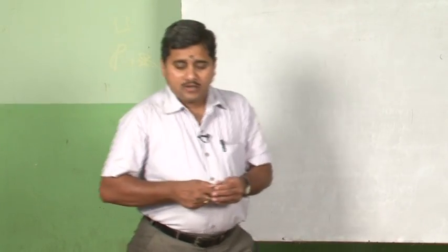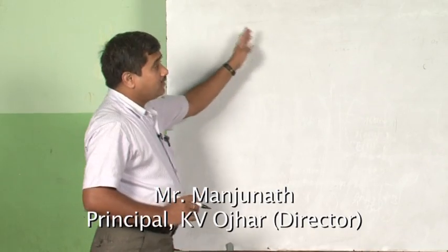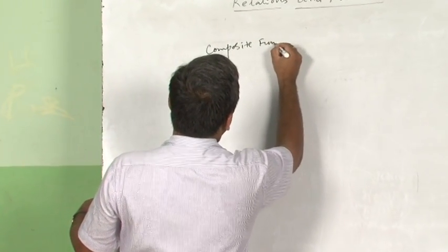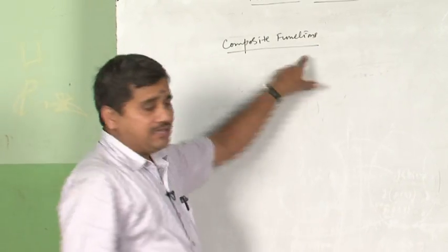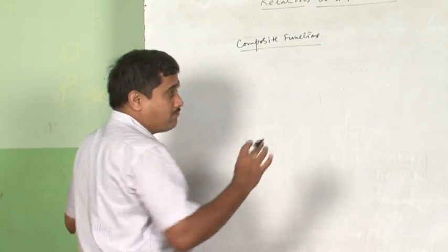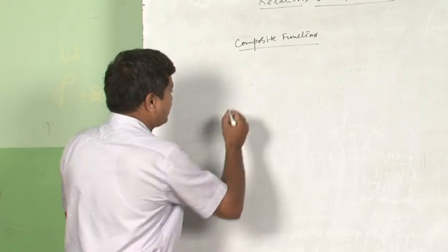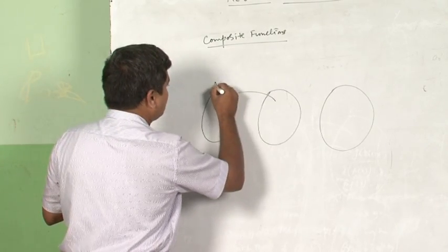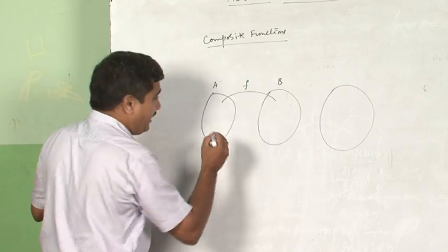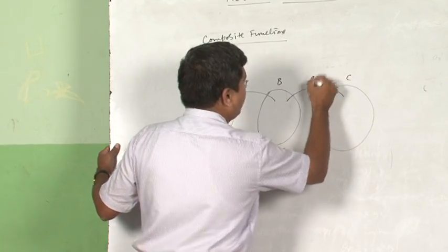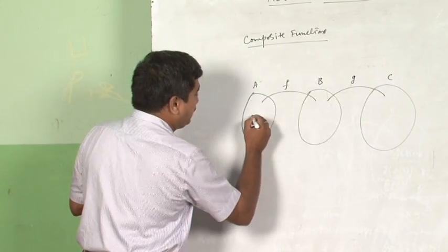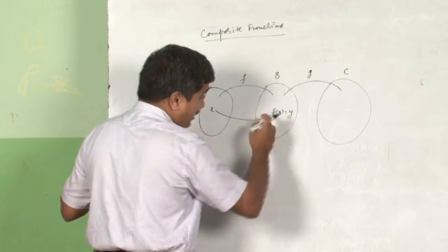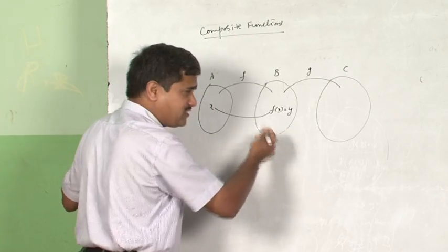Good afternoon, dear children. I shall be continuing the class, having already covered the invertibility of functions. The next topic I am going to teach is composite functions. Composite functions is basically defined as an operation that binds multiple functions together. Observe the graphical representation: there are two sets A and B bound by function F, and sets B and C bound by function G.